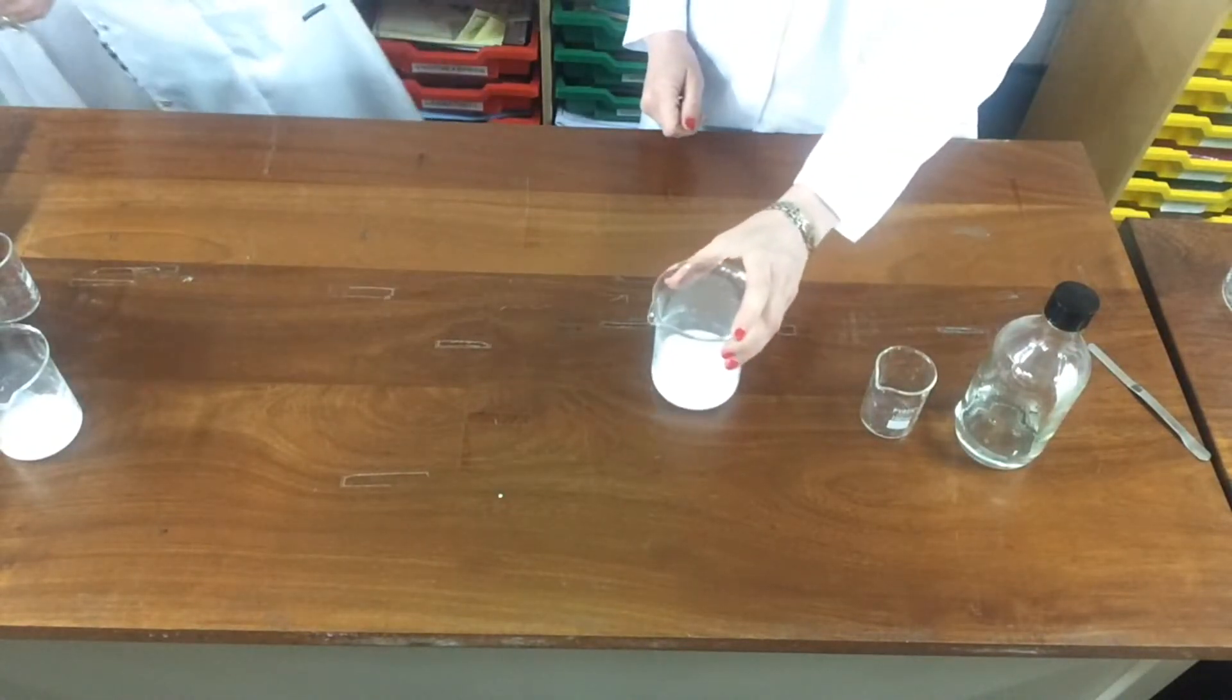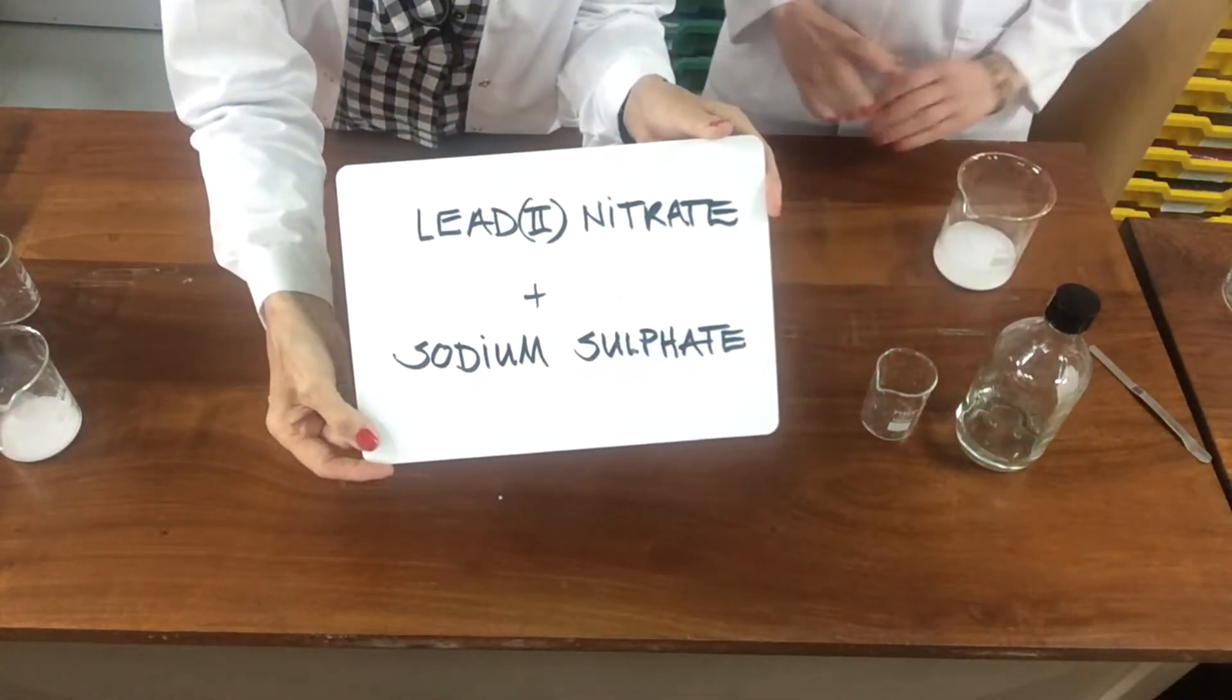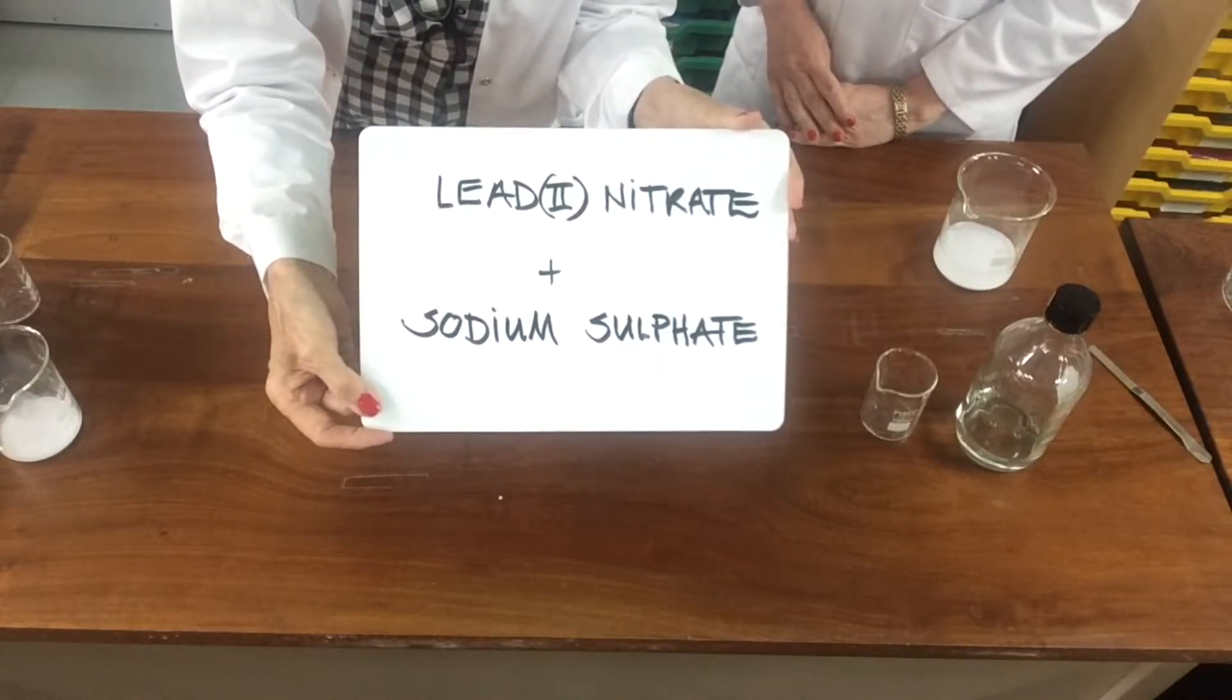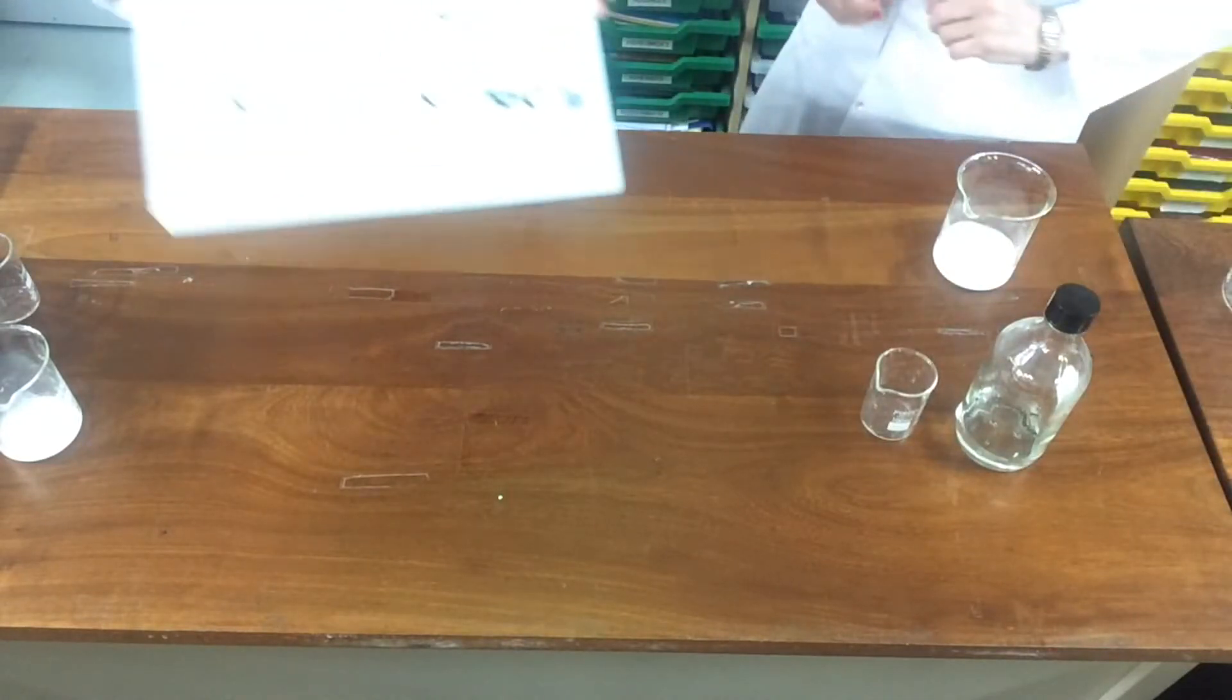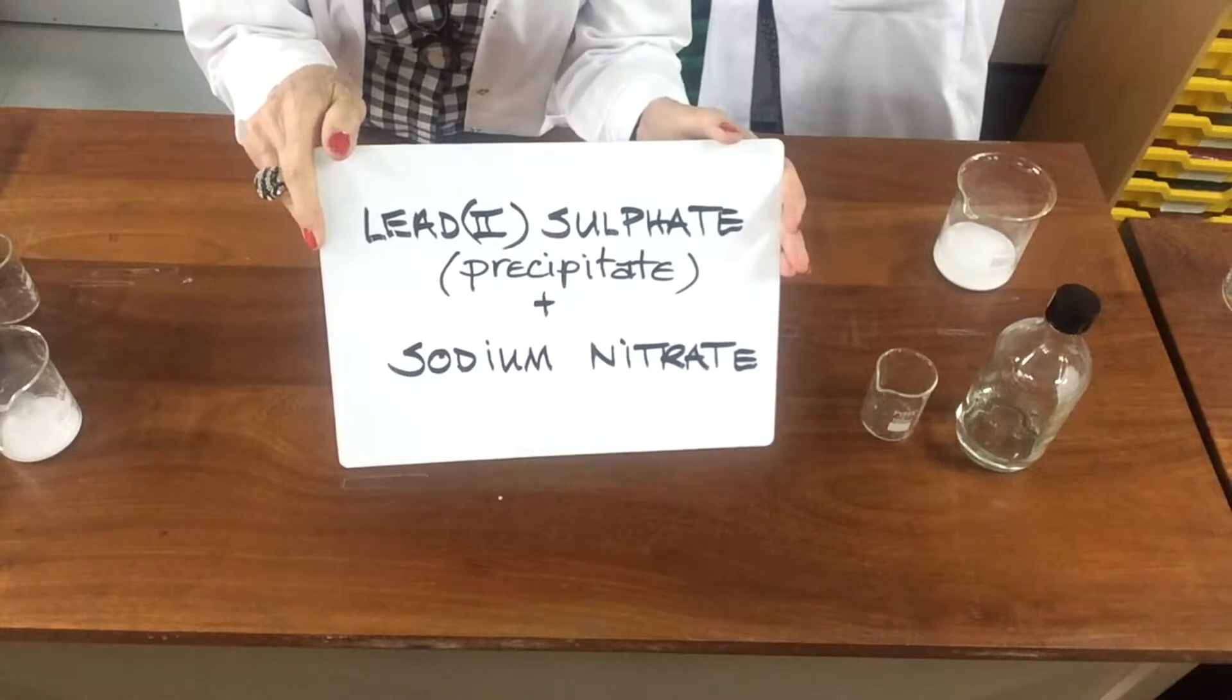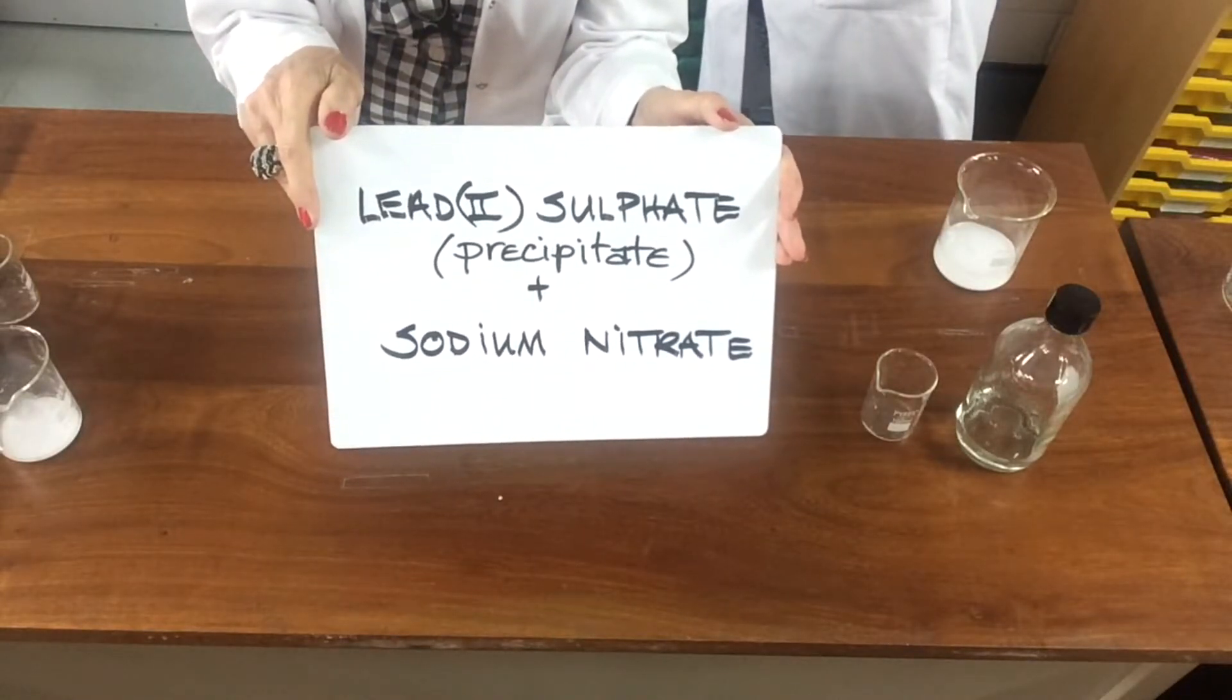The reaction that's happening is we have lead nitrate, we're adding it to sodium sulphate solution, both are solutions. And they swap partners and now we have lead sulphate and sodium nitrate solution.